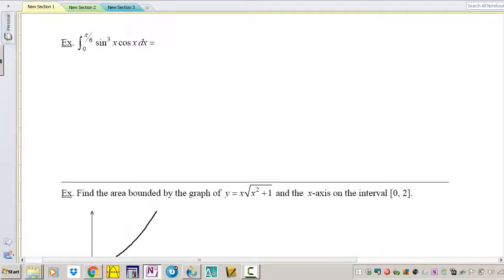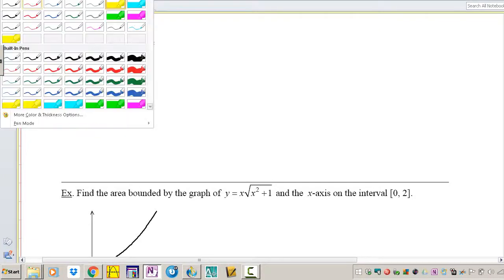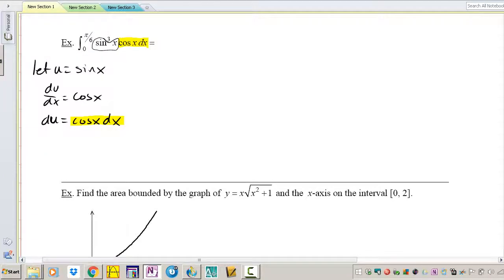So what do we need to do? We need to let u equal sine. Let u equal sine so that when you take the derivative you have cosine. du is equal to cosine x dx and guess what, I have cosine x dx which means that I can replace it with the du.